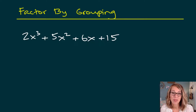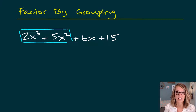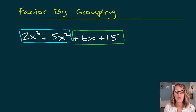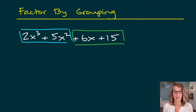Let's look at factoring four terms by grouping. This example has four terms. We want to group them into pairs — the first pair and then 6x and 15 as the second pair. For each of these pairs, I'm going to look for a GCF, the greatest common factor — what goes into both of my terms.